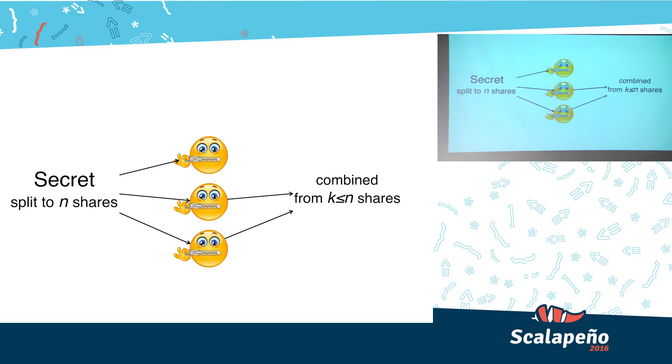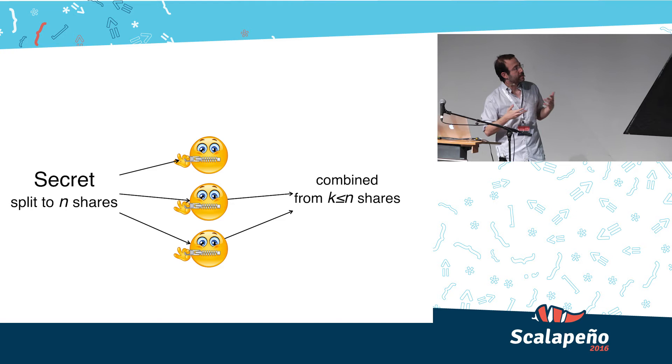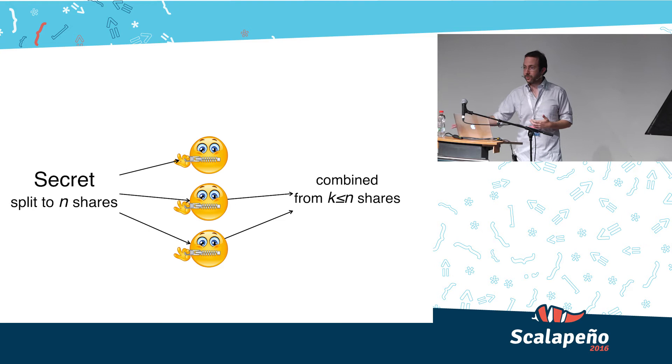and it lets you split that secret into N shares, that you should safeguard on your own, and you are then able to later combine just K, a lower number, a threshold that you have to meet, in order to reassemble the secret.